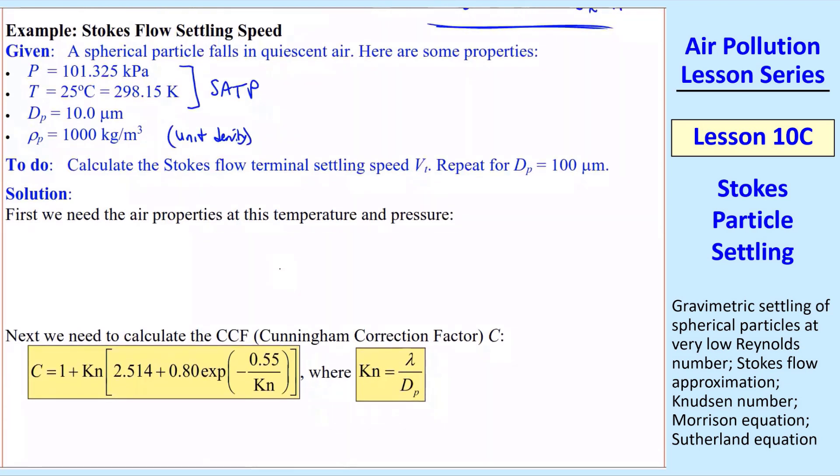Calculate the Stokes flow terminal settling speed vt, and then let's repeat for 100 micron particles.